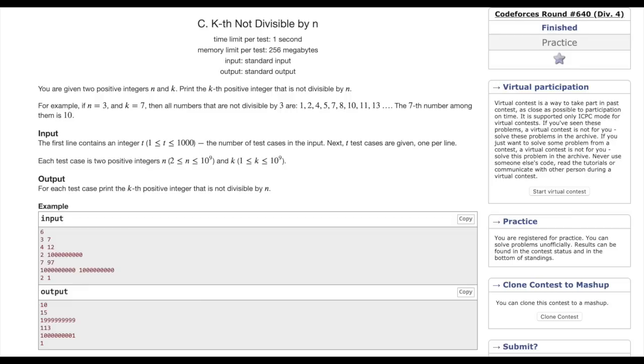For example, if n is equal to 3 and k is equal to 7, then all the numbers that are not divisible by 3 are 1, 2, 4, 5, 7, 8, 10, 11, 13. The seventh number among them is 10.